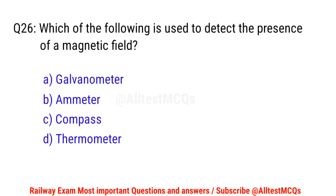Q26. Which of the following is used to detect the presence of a magnetic field? Right option is C. Compass.